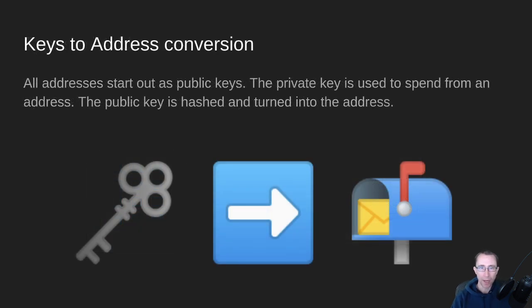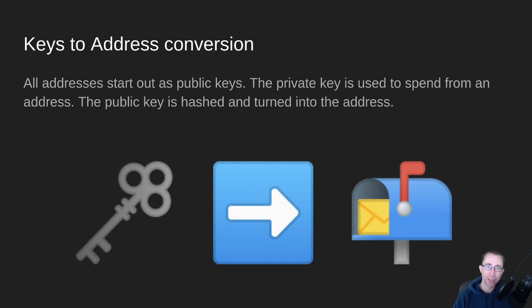So how do we get an address? Your wallet holds keys, and it holds two types of keys. It holds a public key that is used for verification, and it holds a private key that's used for signing and for spending from an address. To create an address that can be sent ADA, the public key is hashed and turned into the address.